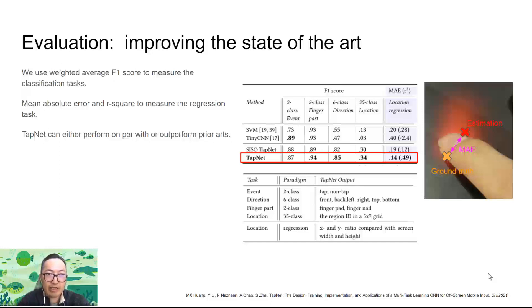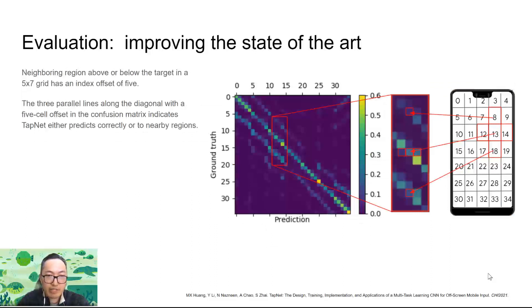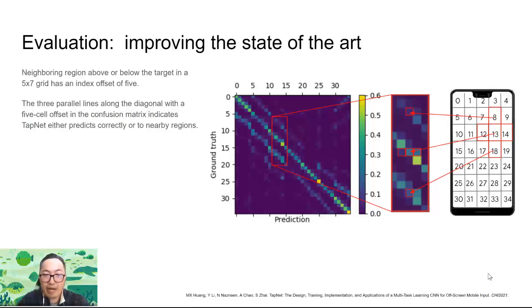TapNet can either perform on par with or outperform prior work. A close examination of the normalized confusion matrix of the 35-class tap location classification shows that neighboring regions above or below the target have an index offset of 5. The three parallel lines along the diagonal indicate that TapNet either predicts correctly or predicts to nearby regions.